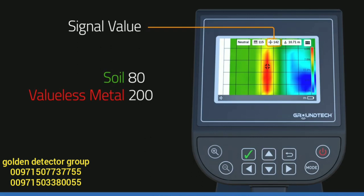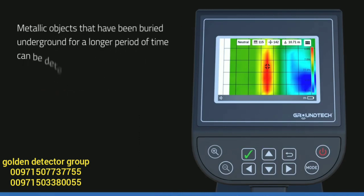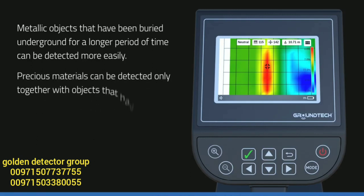For example, when the level of soil is 80 units and magnetic object is 200 units, metallic objects that have been buried underground for a longer period of time can be detected more easily. Precious materials such as gold or silver can be detected only if they were buried together with objects that have high magnetic effect.